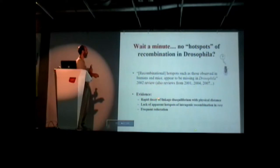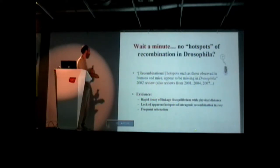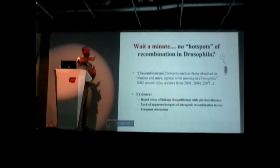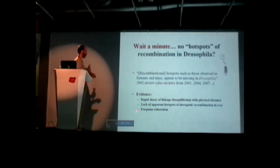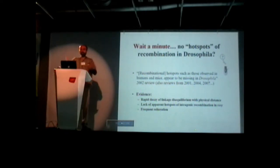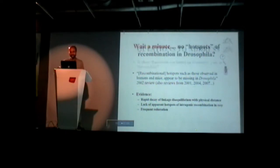The evidence cited for this lack of hotspots — this lack of variation in recombination rate — is the rapid decay of linkage disequilibrium with physical distance. That's not good evidence at all. The lack of mapped hotspots of recombination in one gene, just briefly reiterated and repeated enough times, gets accepted as true. Not a good result.